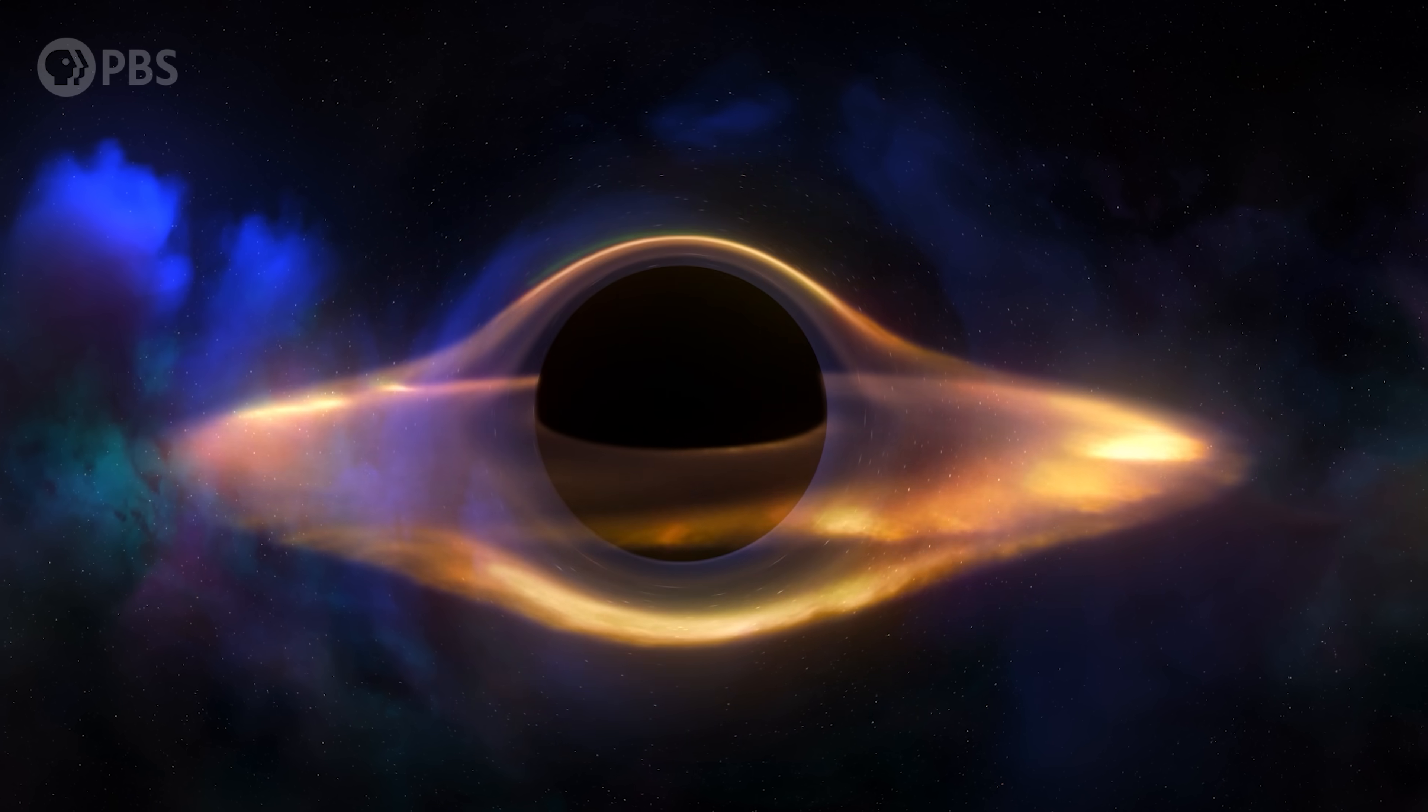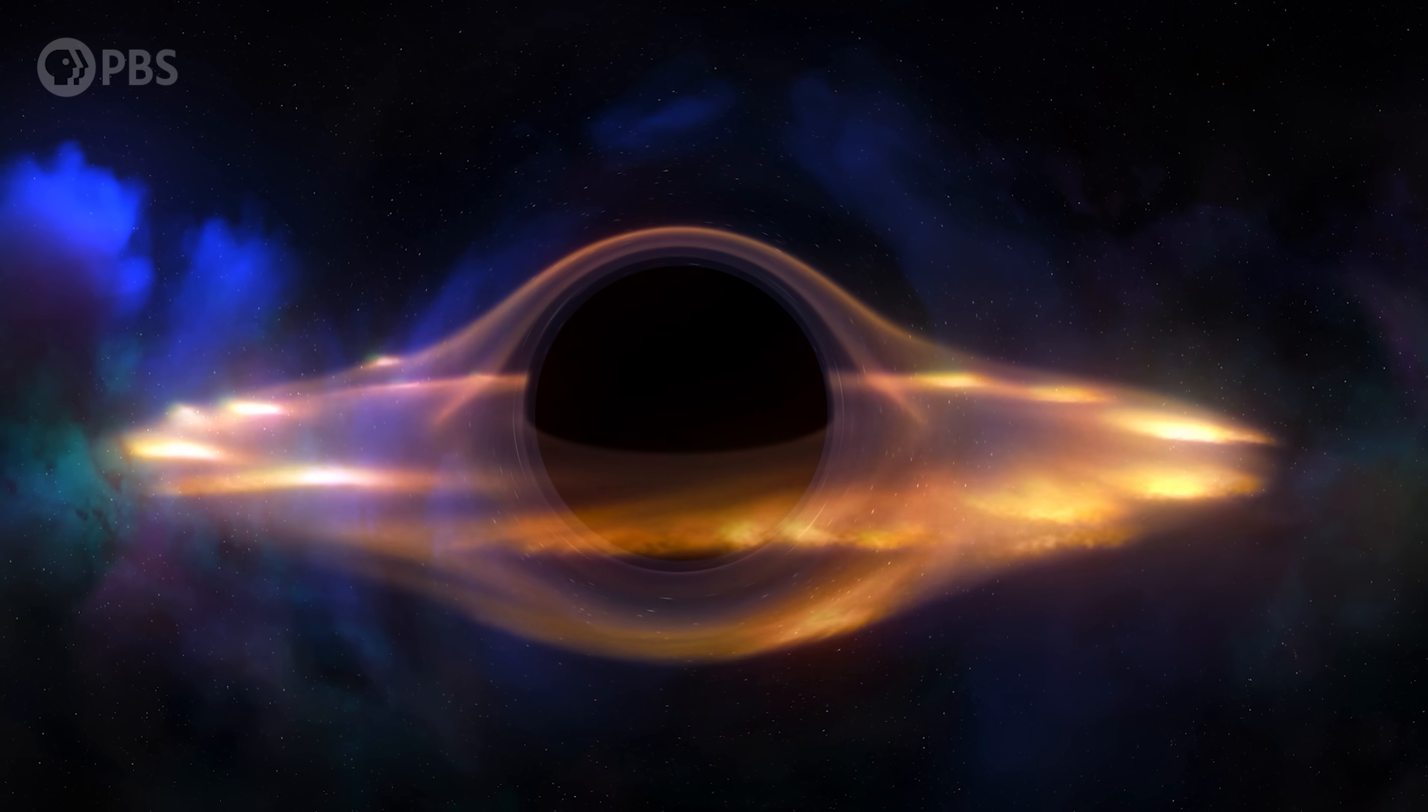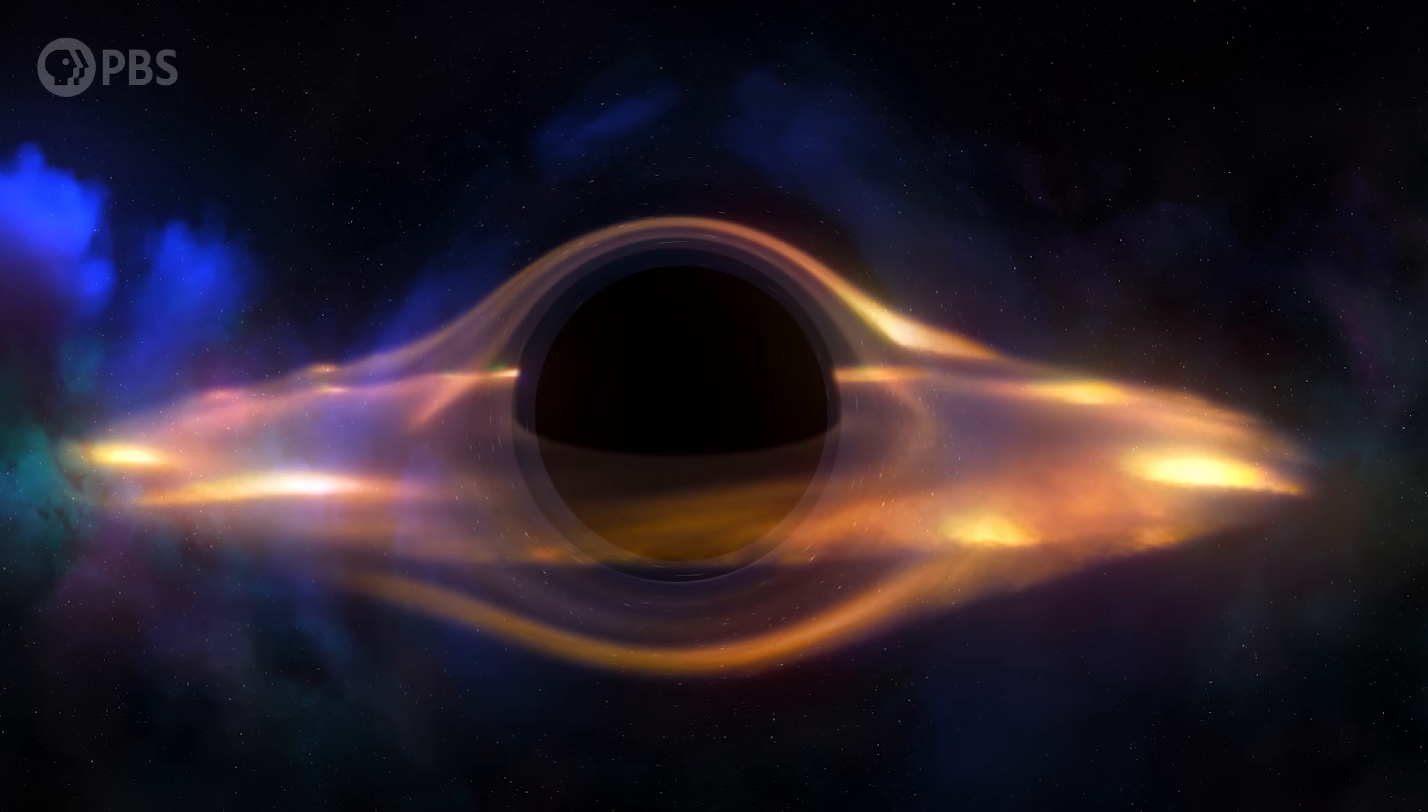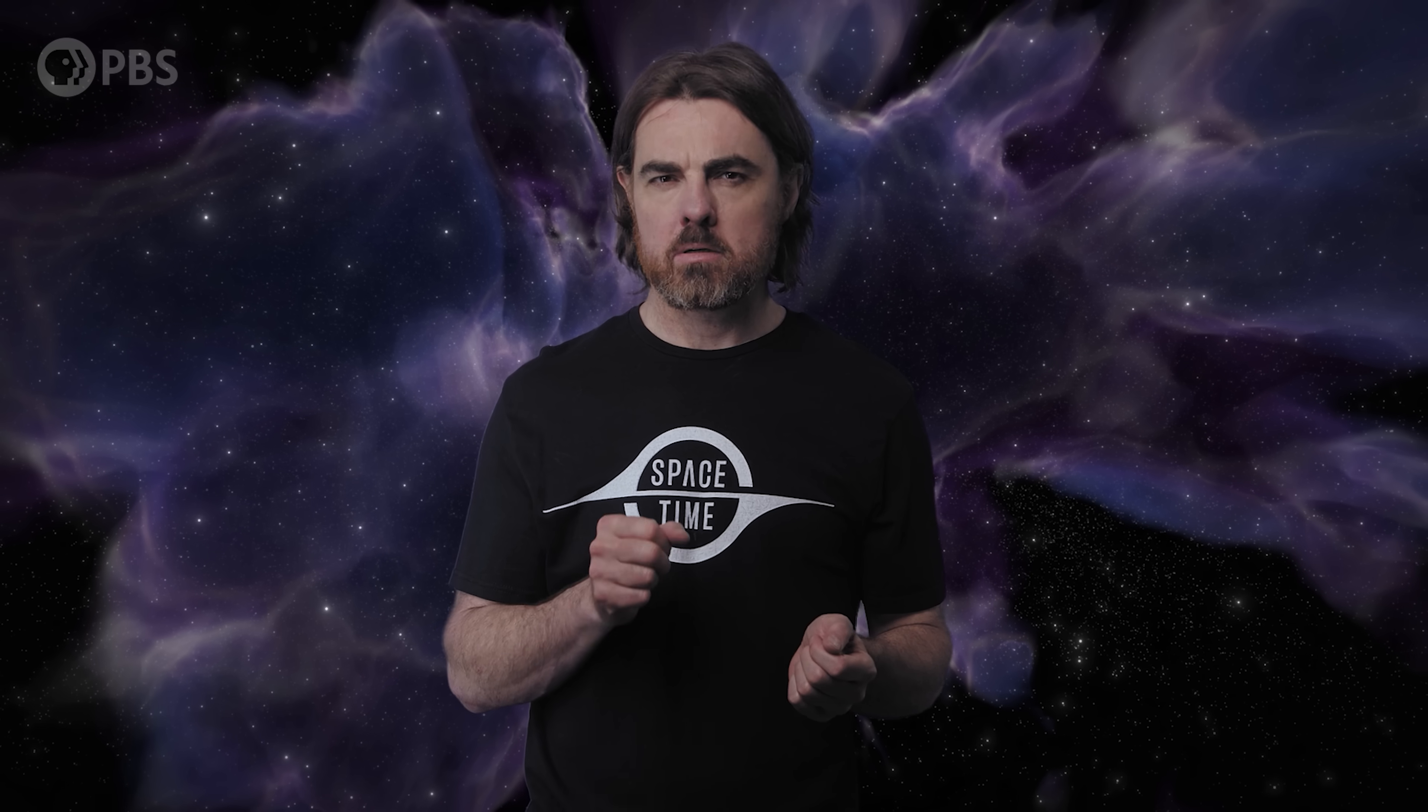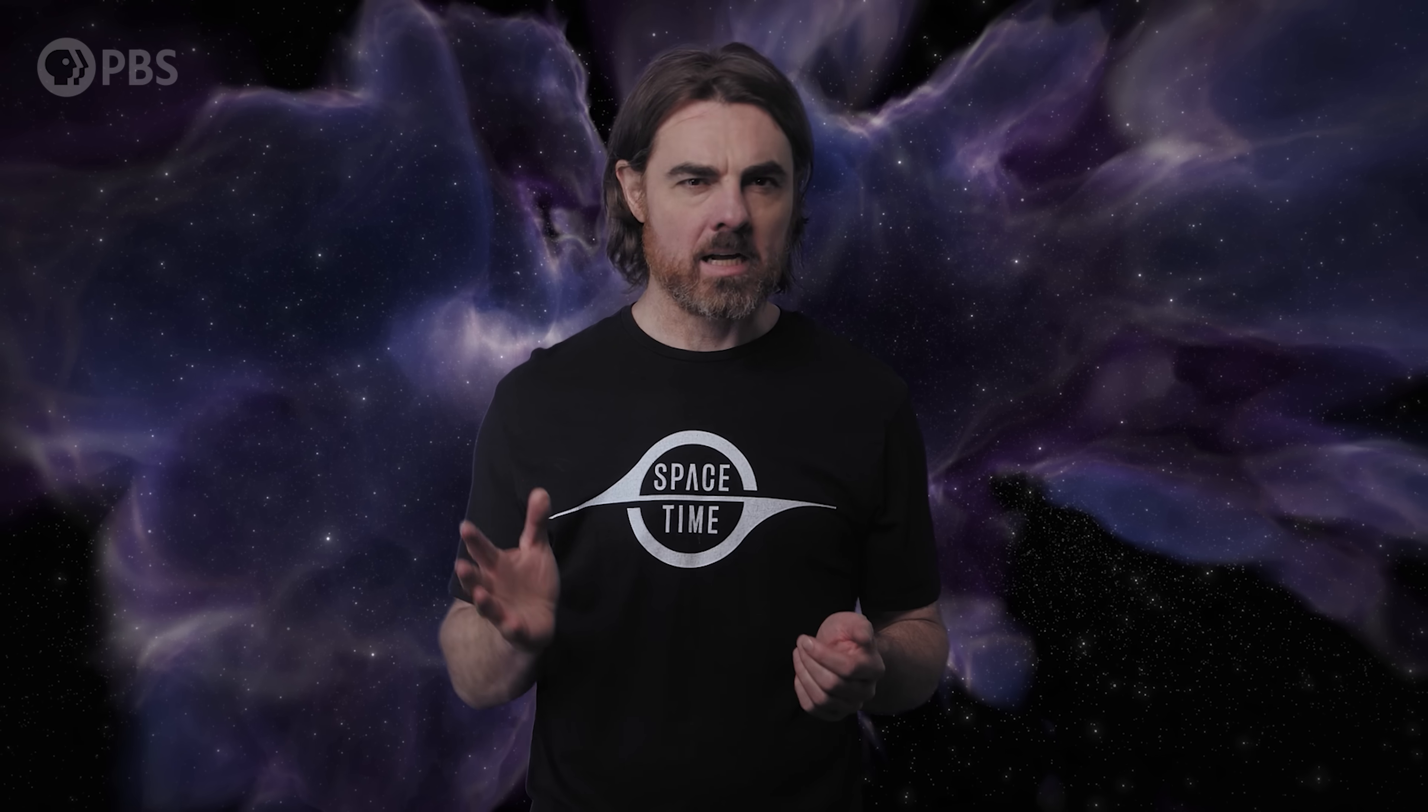The primary characteristic that defines black holes is right there in the name. Black holes are black. The gravitational pull at the event horizon is so powerful that not even light can escape. In this case, black means absence of light, but we also think of black as indicating absence of color. But it turns out that there is a way to make a colored black hole, as long as by color you mean quantum chromodynamic charge.